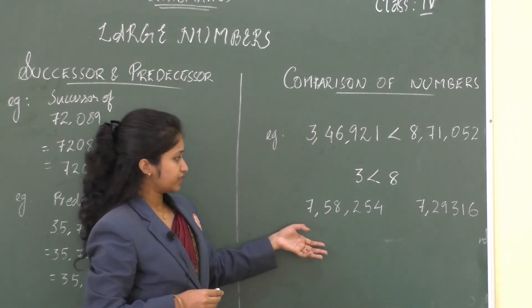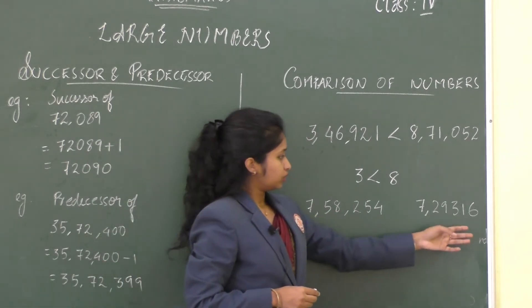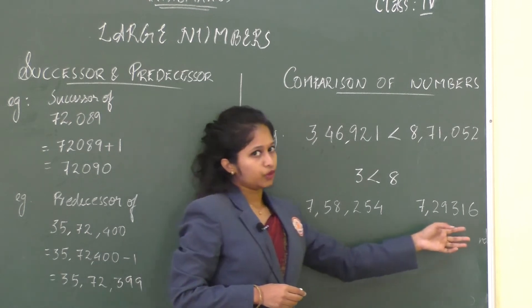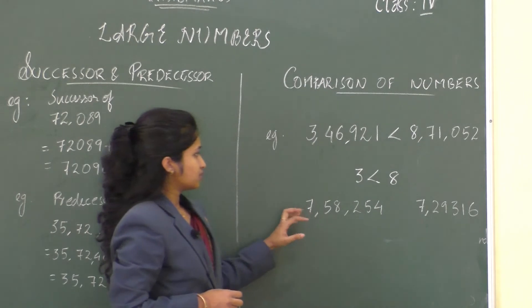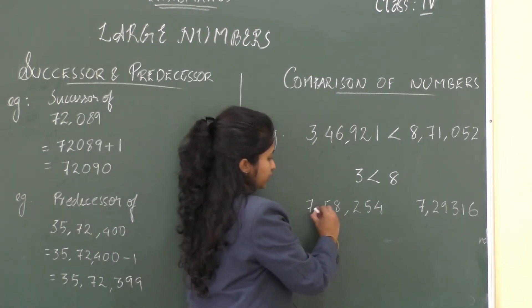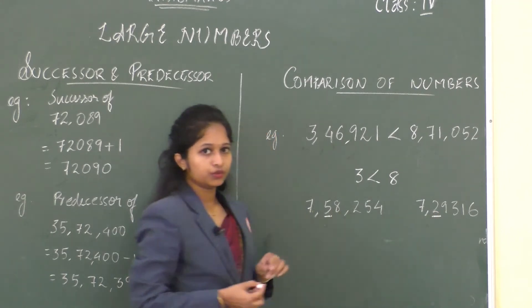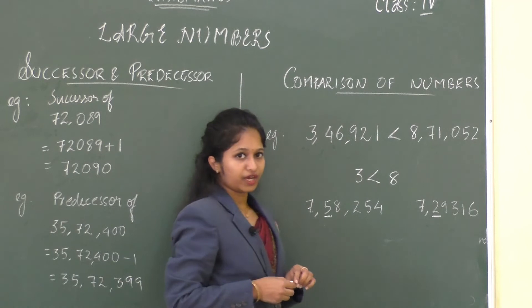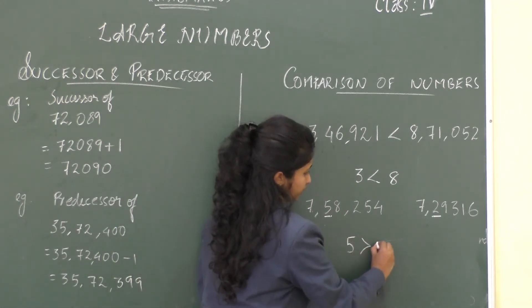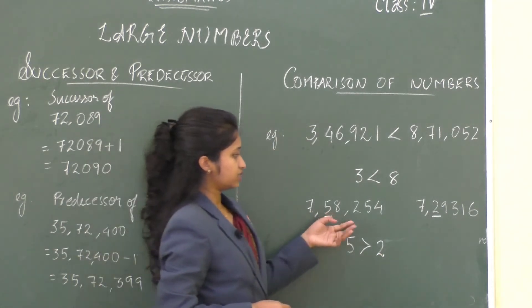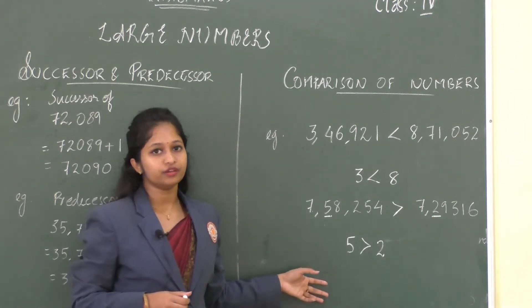Here is another example where the starting digit is the same and the total number of digits in both numbers is also the same. So we look at the next digit. Here it is 5 and here it is 2. Is 5 greater than 2? Yes. So this number is greater than the other number. This is how we compare two numbers.